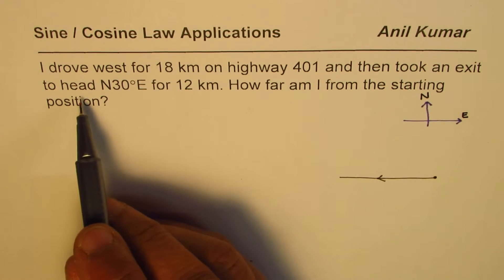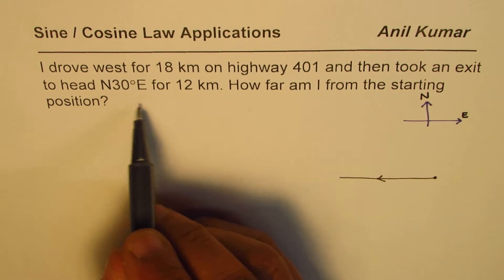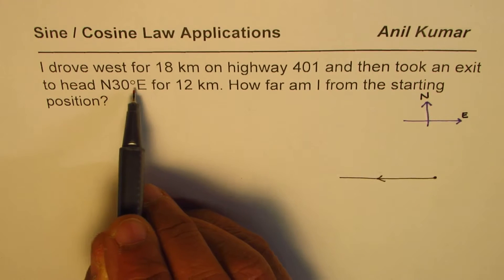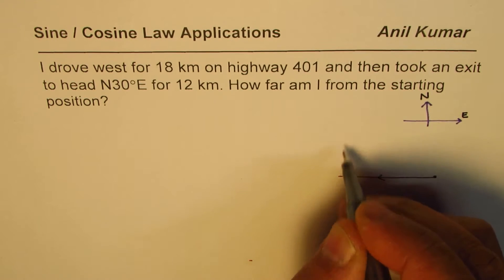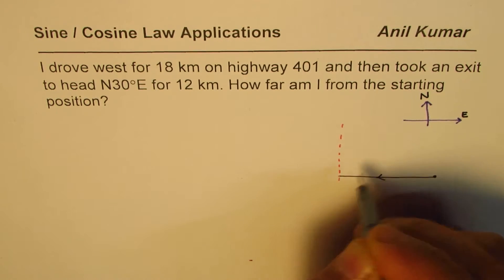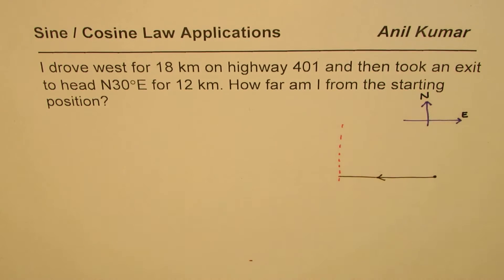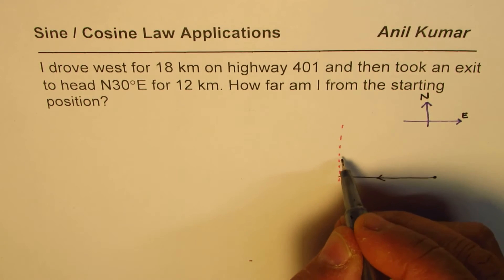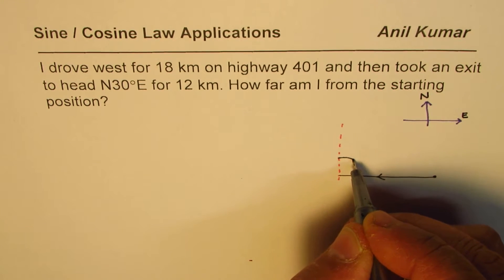Then took an exit to head. When you have an angle given in this position, we are measuring angle from north 30 degrees east. I'm making a coordinate, so north I'm drawing a line parallel to this.